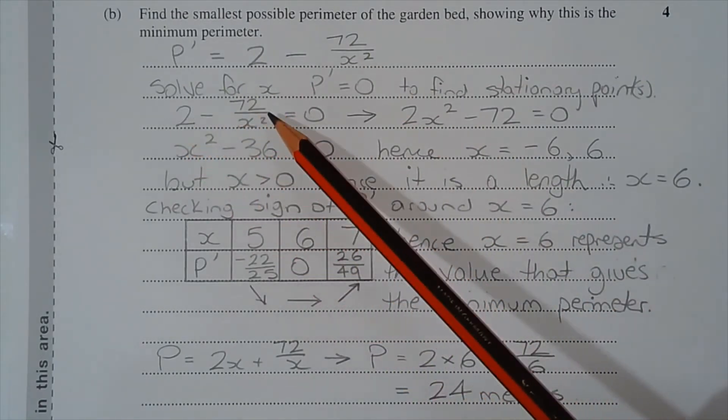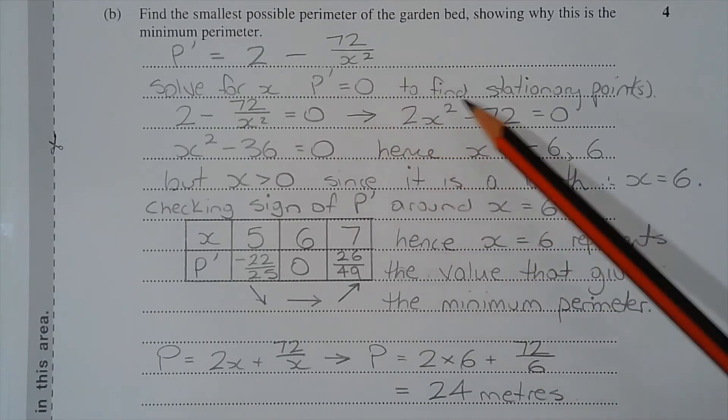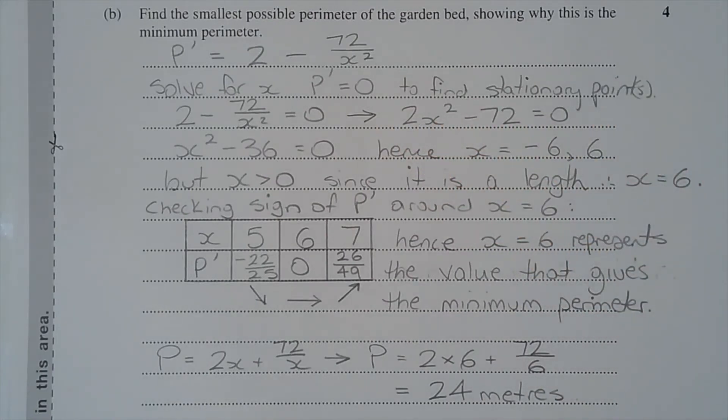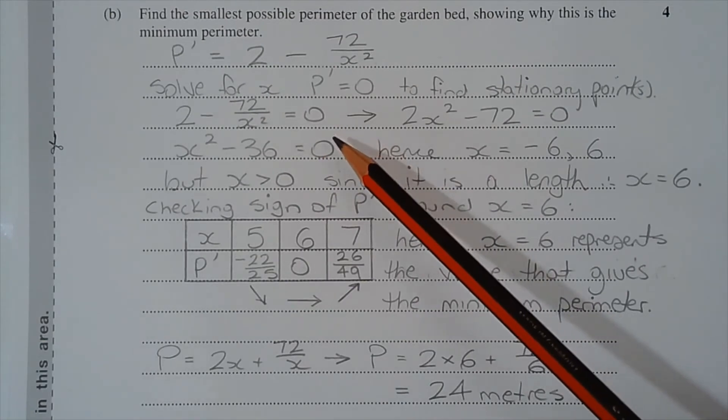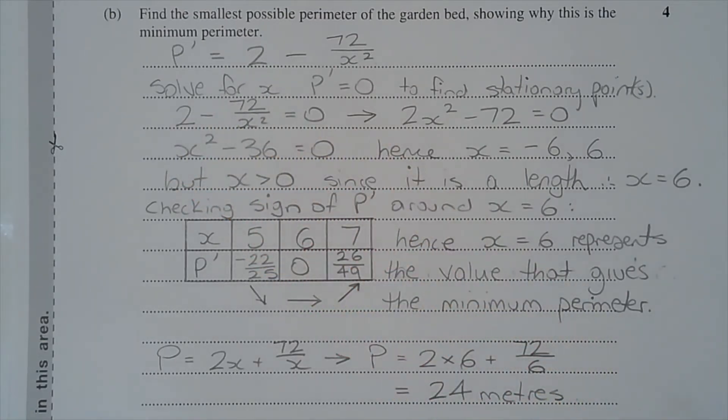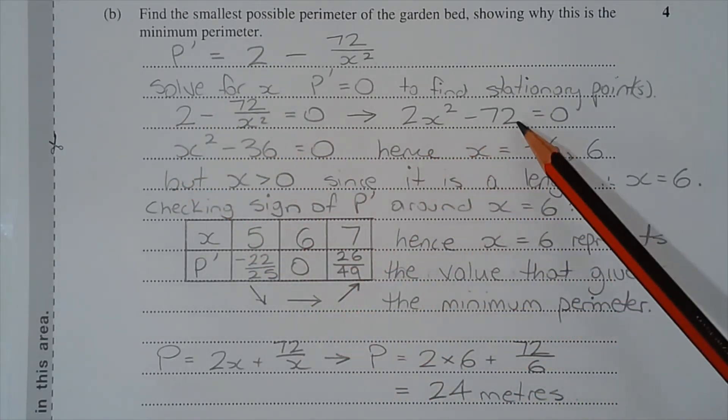Next we solve for x the equation p dash equals 0 to find any stationary points. So that's 2 minus 72 over x² equals 0, and multiplying all the terms by x² we get 2x² minus 72 equals 0.